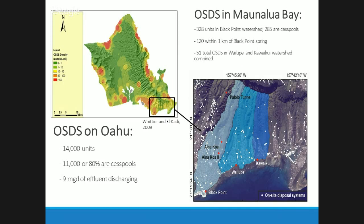In my study area, I separated three coastal sites — Black Point, Wailupe, and Kāne'ohe Kai — based on their watershed delineations. Black Point has the highest density of on-site disposal systems, around 328, with approximately 120 within one kilometer of the groundwater spring sample, and predominantly cesspools. That compares to around 51 total in both the Wailupe and Kāne'ohe Kai watersheds. I also sampled Palolo Tunnel, Inocoa 1, and Inocoa 2 — three terrestrial wells — to see geochemistry evolution as I got closer to the coast and the high OSDS density.